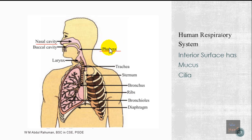After the pharynx, air goes into the larynx — the area where the sound box is. When we speak, the sound we hear is due to the vibration of vocal cords located in the larynx. Then we have the trachea, the long tube that connects the nasal cavity and pharynx to the lungs. The trachea is a passage where air travels; it also has mucus and cilia to trap dust particles.